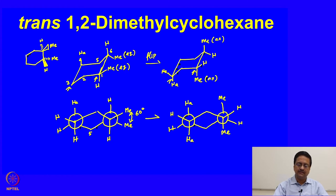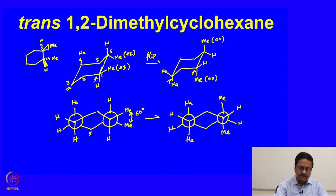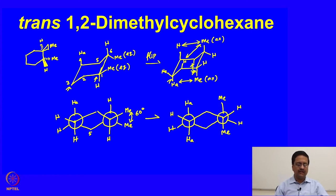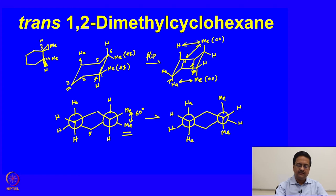The methyl groups are now in di-axial orientation. In the di-axial conformation, you have the hydrogens causing 1,3-diaxial interactions between the methyl and hydrogen groups. One must compare the energy values associated with the n-butane gauche interaction and the corresponding 1,3-diaxial strains to decide which conformation is more stable. I would like to leave it to you to find out which of these two conformations is going to be more stable.